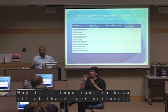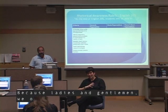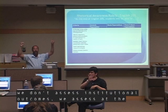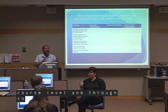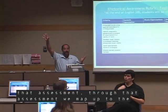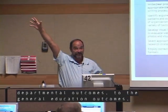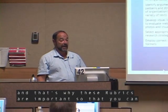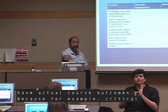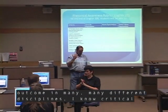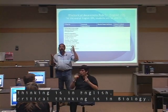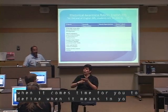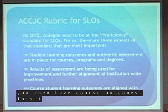Why is it important to know all four of those outcomes? Because we only assess one time. We don't assess departmental outcomes, general education outcomes, or institutional outcomes — we assess at the course level. Through that assessment, we map up to the departmental outcomes, to the general education outcomes, to the institutional outcomes. We assess one time and one time only at the course level. That's why rubrics are important — so you can have actual course outcomes. For example, critical thinking is a departmental outcome in many disciplines — English, biology — but critical thinking will mean different things in those departments, and when you define what it means in your classes, you then have course outcomes.